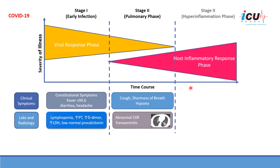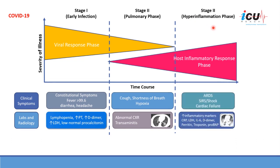Some of those patients may progress into the hyperinflammation phase, where they develop an ARDS-like picture. They may have systemic inflammatory response syndrome with shock and cardiac injury. Laboratory-wise, they may have increased inflammatory markers — mainly CRP, LDH, ferritin, interleukin-6, D-dimers, troponin, and pro-BNP.